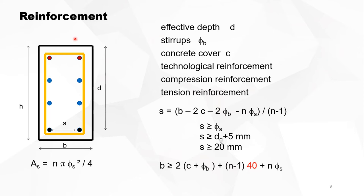Now a small recapitulation of how the different elements of a beam are designated. D is the effective depth. The stirrups — we indicate the diameter of the stirrups as VB. Concrete cover is C; it is the concrete cover on the stirrup.